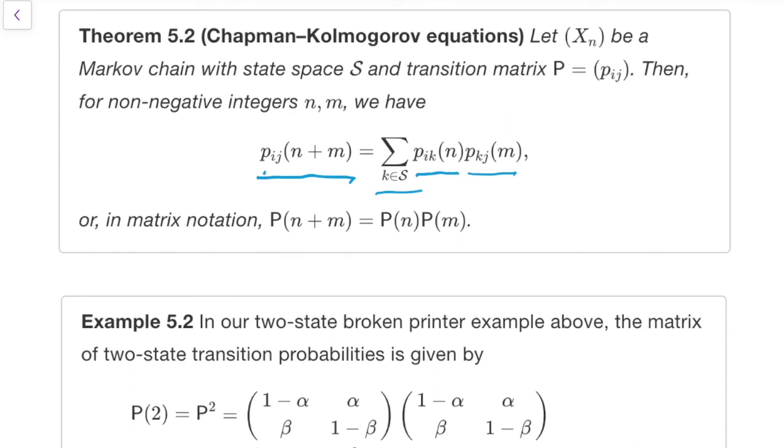So, again, that's saying the same thing. To get from i to j in n plus m steps, we get from i to somewhere in n-steps, and then come back in the remaining m-steps.